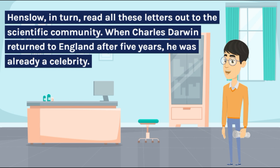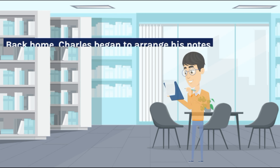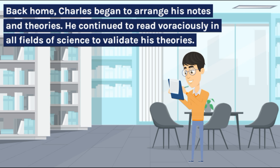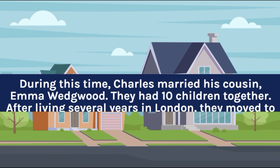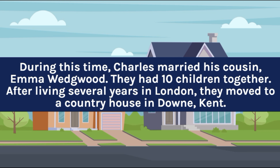When Charles Darwin returned to England after five years, he was already a celebrity. Back home, Charles began to arrange his notes and theories and continued to read voraciously in all fields of science to validate them. He was afraid, for he had stumbled upon a brand new theory — a theory that could prove that human beings were related to apes and that man was not a superior animal. During this time, Charles married his cousin, Emma Wedgwood, and they had ten children together.